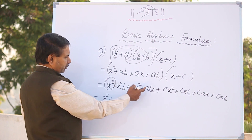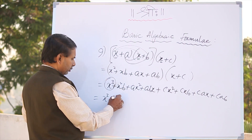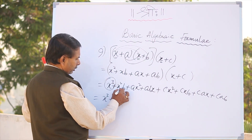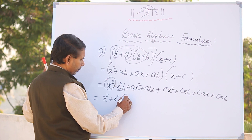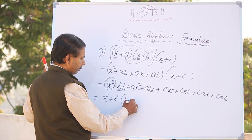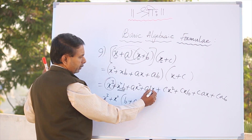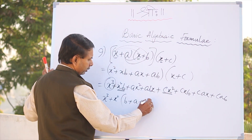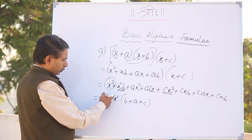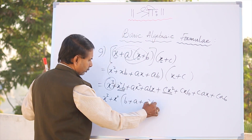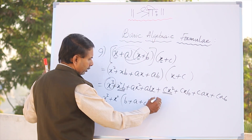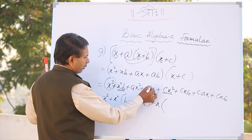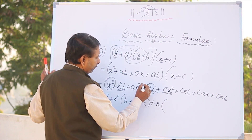x cube plus — next bigger is x cube — x square. x square is equal to b plus a plus c. Correct?